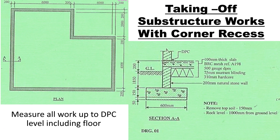Hello everyone, welcome back to our channel. Today we are going to do a video about taking off substructure work with a corner recess. You remember we did another video about how to calculate the center line of a rectangle with a corner recess. Now we are going to do a very simple takeoff which involves just a building with only walls — it has no columns. The section taken here has only the wall, the hardcore, the blinding, the concrete, and the DPC.